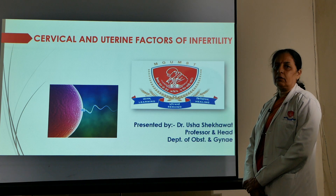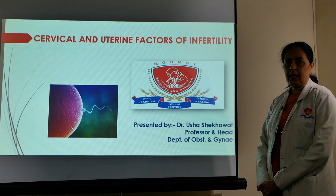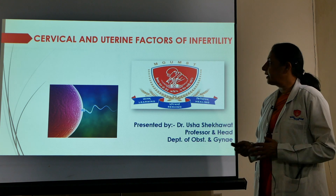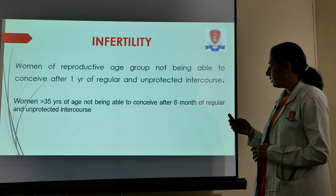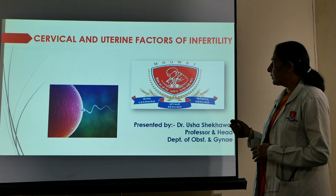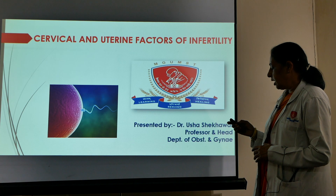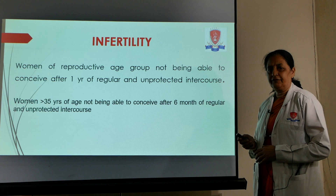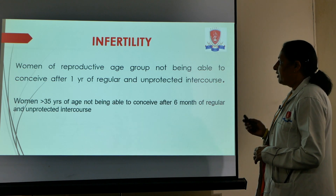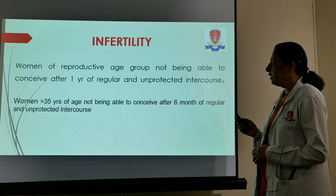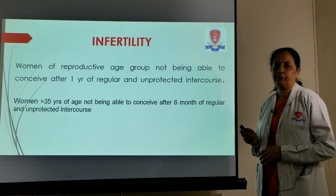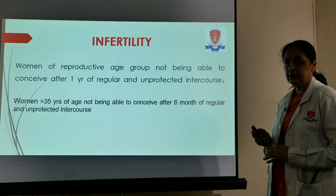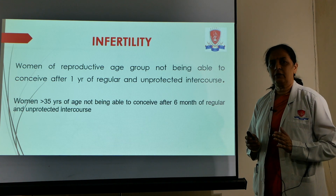Today's class will cover infertility, specifically cervical and uterine factors. Infertility is defined as when a woman of reproductive age is not able to conceive even after one year of regular and unprotected intercourse. The incidence is almost 15%, and out of this 15%, one-third are because of the male factor and one-third are because of the female factor.